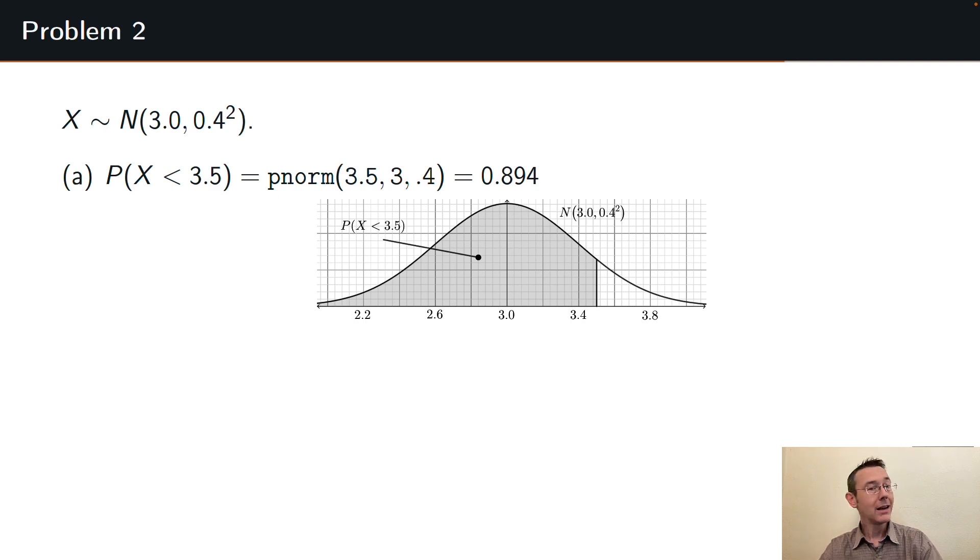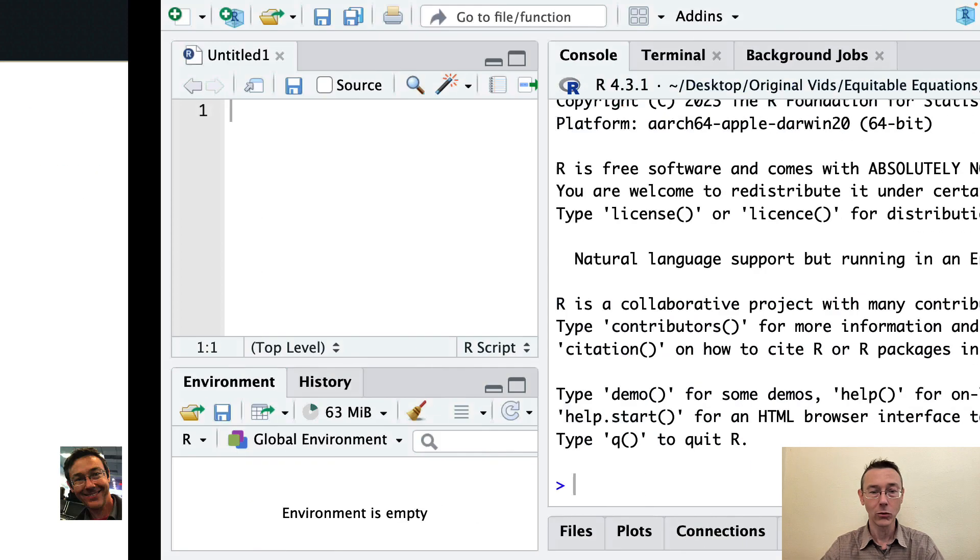We have about 89.4% of this area is shaded, so the probability of getting a random blade of grass whose length is less than 3.5 inches is about 89.4%. I think I'll swap over to R and actually code that in really quickly. I also want to do this problem a second way using a Z score.